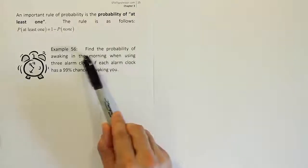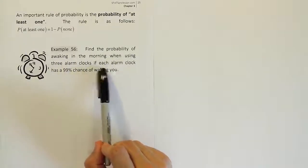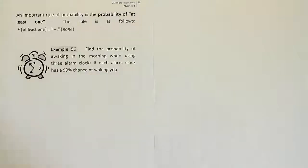Example 56. Find the probability of waking in the morning when using three alarm clocks if each alarm clock has a 99% chance of waking you. Alright, so to do this problem, I have to figure out first what type of problem it is.